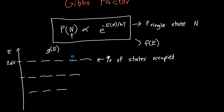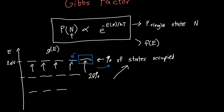We want to find the percentage of states that are occupied with electrons — how many of these states have an electron inside them. The beauty of the Gibbs factor is that if I know the probability of a single state being occupied, that's just the same thing as the percentage of the states occupied. If the probability of each state being occupied is, for example, 20%, then on average 20% of those states are going to be occupied, especially as you get a very large number of states like 10 to the 10.